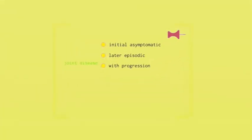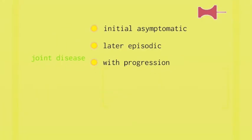Synovial deposition is usually initially asymptomatic and can remain asymptomatic for long periods. If the crystals come out of the tophi deposits and come into suspension in synovial fluid, they cause intense inflammation. These are the episodes of acute inflammation that we characterize as acute gout, initially often in the lower limb joint, particularly the great toe.